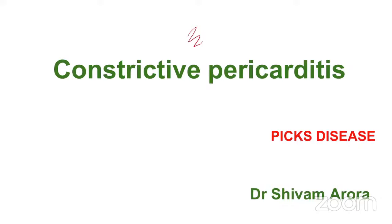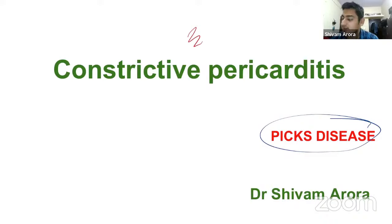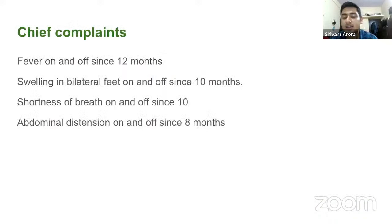Today we'll discuss the important topic of constrictive pericarditis. One rare fact is that it is also known as Pick's disease, although Pick's disease is also another name for frontotemporal dementia. Yes, constrictive pericarditis is also known as Pick's disease, though it is an unpopular term for it. We'll first start with a case and then discuss constrictive pericarditis.